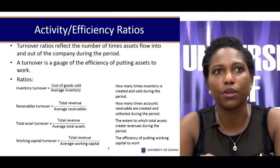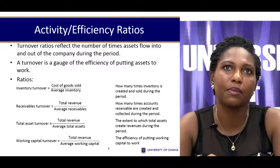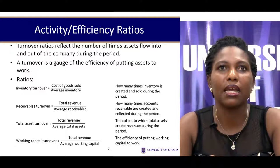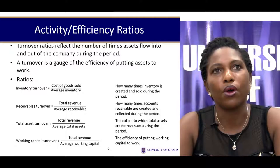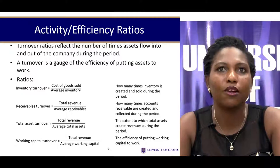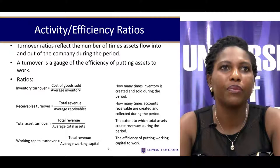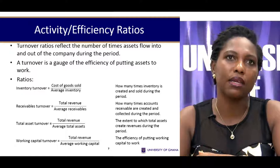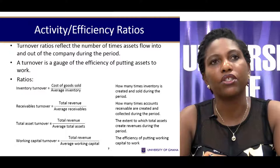Activity and efficiency ratios look at the number of times a particular item has been turned over within the fiscal year. For turnover elements we can look at inventory turnover, receivables turnover, total assets turnover, and working capital turnover. Inventory turnover looks at how well a firm turns over its inventory within an accounting year, normally calculated as cost of goods sold divided by inventory.